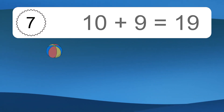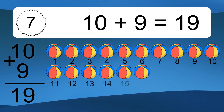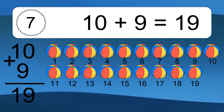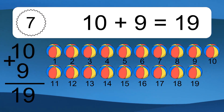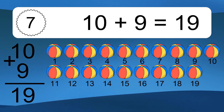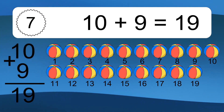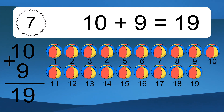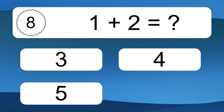10 plus 9 equals what? 10 plus 9 equals 19. Let's count it: 1, 2, 3, 4, 5, 6, 7, 8, 9, 10, 11, 12, 13, 14, 15, 16, 17, 18, 19.